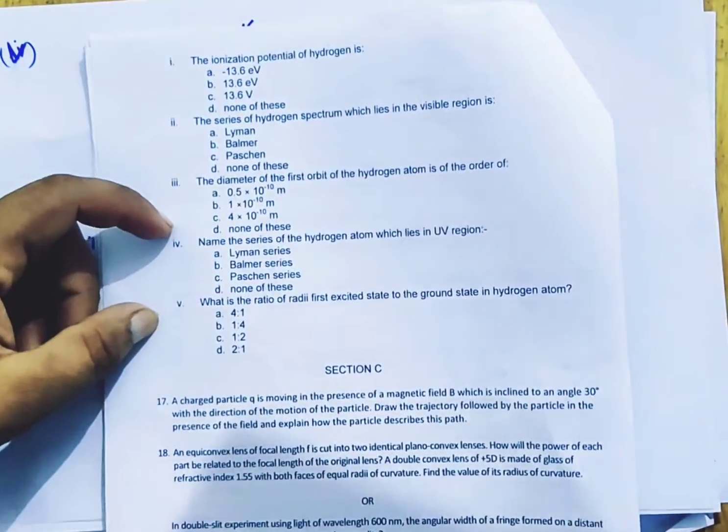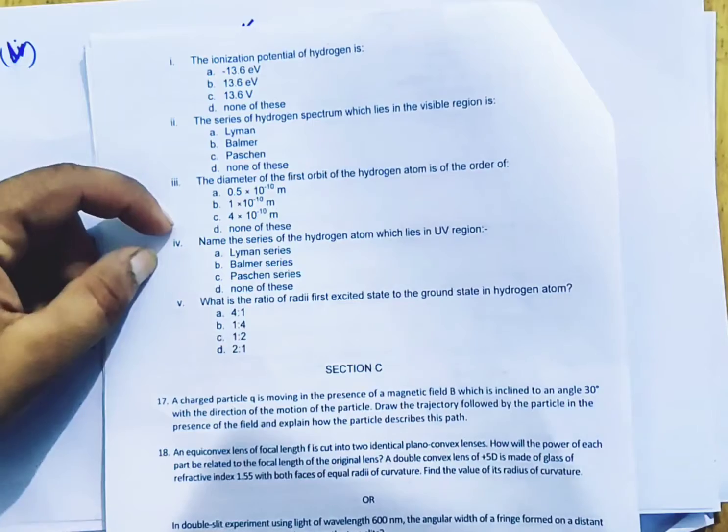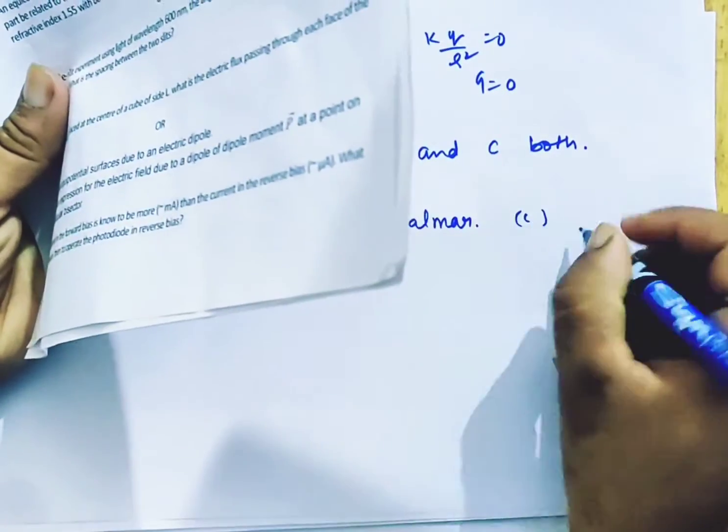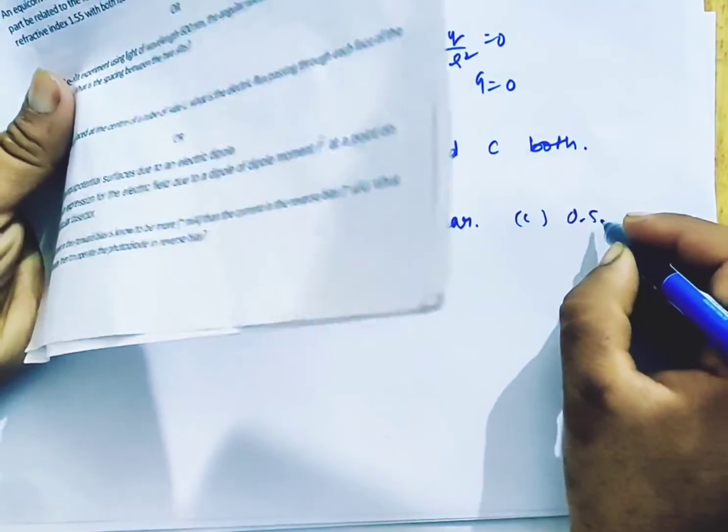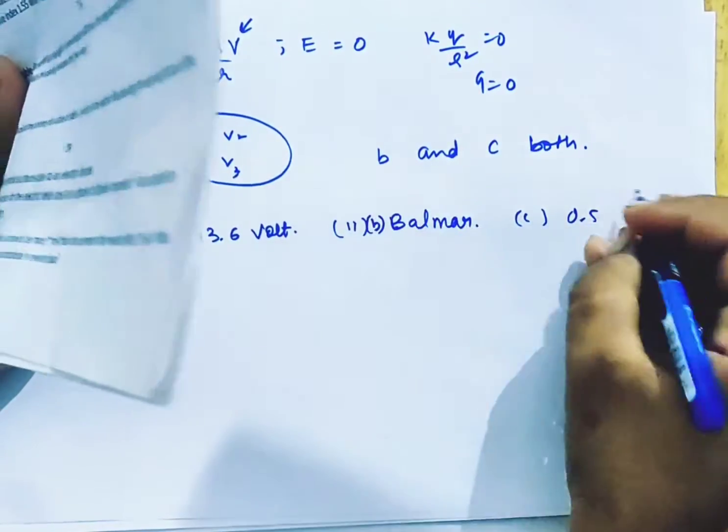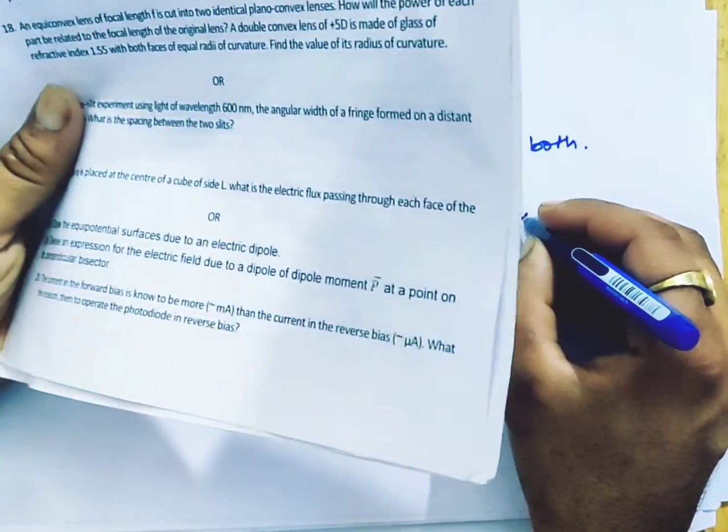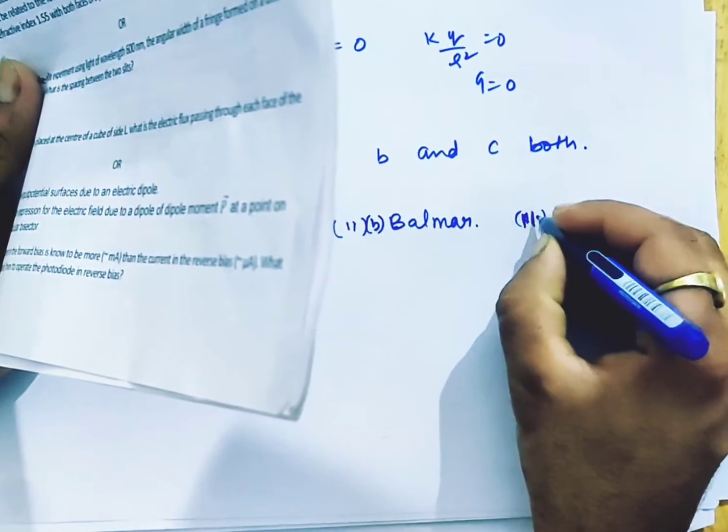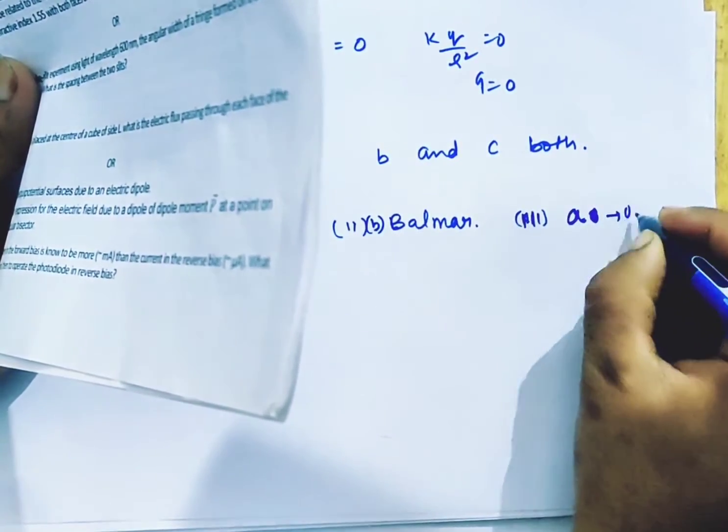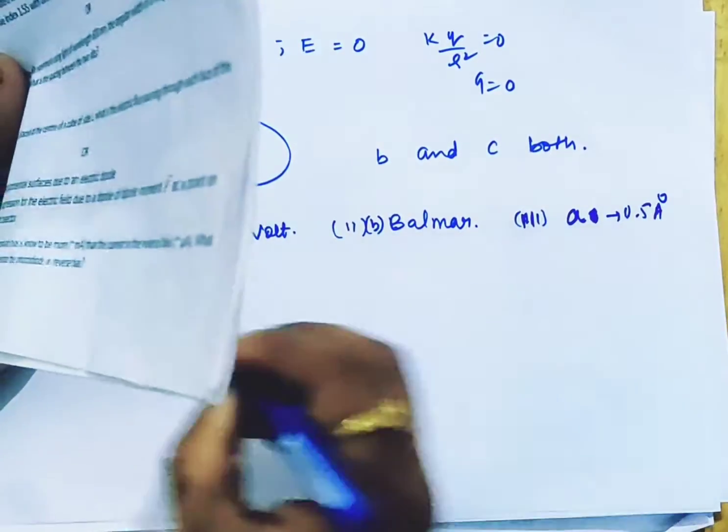The diameter of the first orbit of hydrogen atom is of the order of 0.5, 10 power minus 10 meter. This is also factual. 0.5 angstrom. Then we have marked and marked. So the second being called B marked. Then the third being called B marked number of third. And third being called A which is 0.5 angstrom.